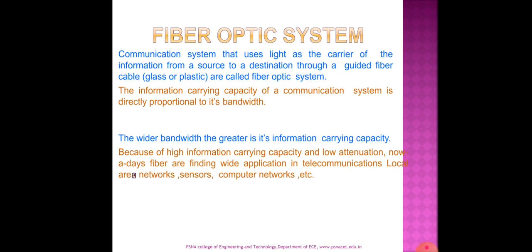First, what is a fiber optic system? It is a communication system that uses light as the carrier of information from a source to a destination through a guided fiber cable that may be glass or plastic — called a fiber optic system. The information carrying capacity of a communication system is directly proportional to its bandwidth. The wider the bandwidth, the greater is its information carrying capacity. Because of high information carrying capacity and low attenuation, fiber is now finding wide application in telecommunications, local area networks, sensors, and computer networks.